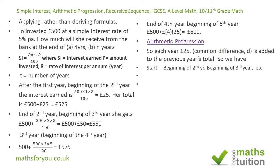So we have a sequence of terms: the first term is her original investment of £500. The second term corresponds to the end of the first year, which is £500 plus 25, or using the AP formula a + (n-1)d: £500 + (2-1)×25 = £500 + 25 = £525. The third term, at the end of the second year, gives £550, and the fourth term at the end of the third year gives £575.